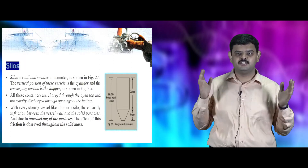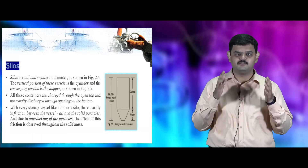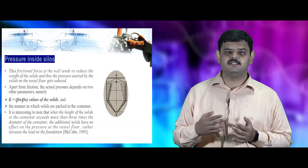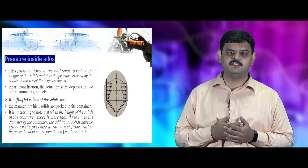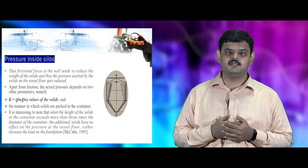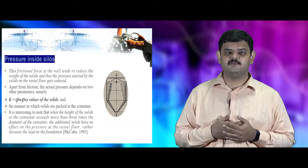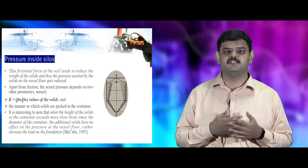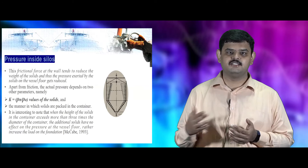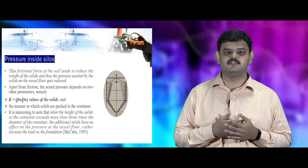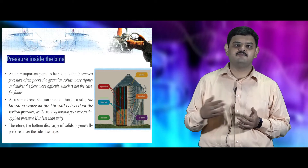The top part of a silo is known as the cylinder and the bottom part is known as the hopper. Material is fed from the top and discharged from the bottom. The frictional force between the walls of the silos and the solid particles is felt throughout the material. Apart from frictional force, two parameters influence the pressure: the coefficient of flowability and the manner in which solids are stored inside the silos.